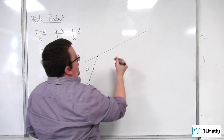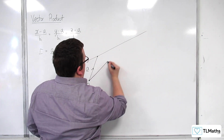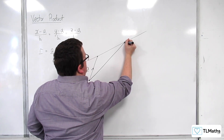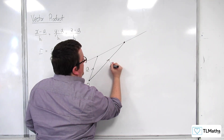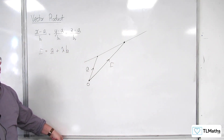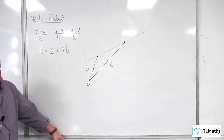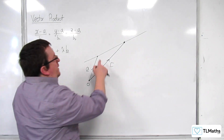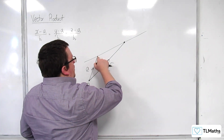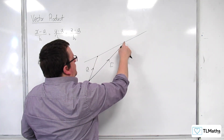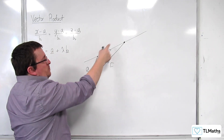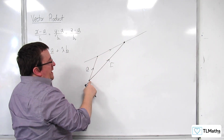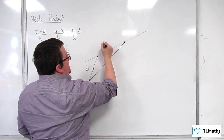So we can say that a general point on the line — let's place it here for the time being — will have position vector r, which you remember is (x, y, z). Now, if you want to get from this point to this point, we can work out that vector: to get from this point to this point, I can go minus a plus r, which is the same as r minus a.